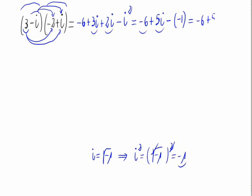Which makes negative 6 plus 5i. Negative negative makes positive plus 1. This equals minus 5 plus 5i.